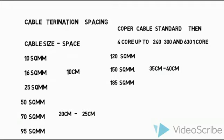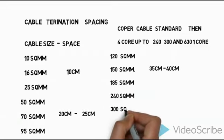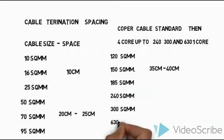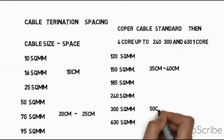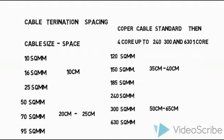This one would have 4 cores. We can use the space like 250, 300, or 630 square mm. We can also use the space like a 60 square mm. This is a very important concept of spacing.